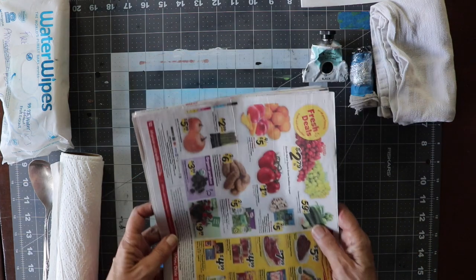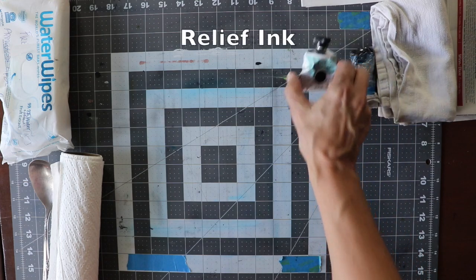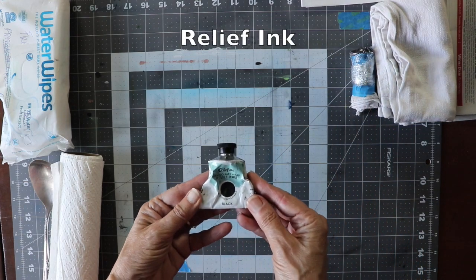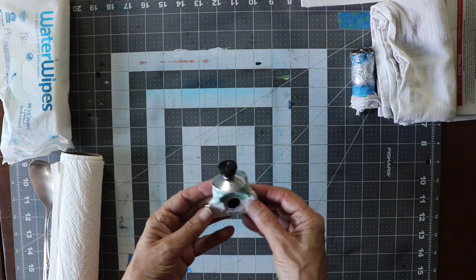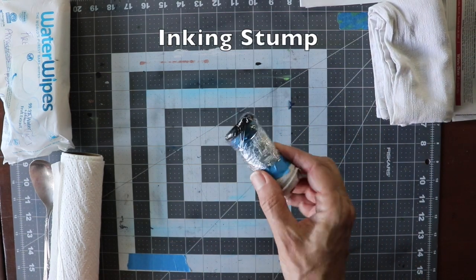Newsprint or anything you could throw away after you use it, relief ink from Caligo, and an inking stump.